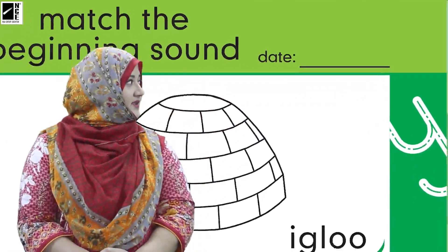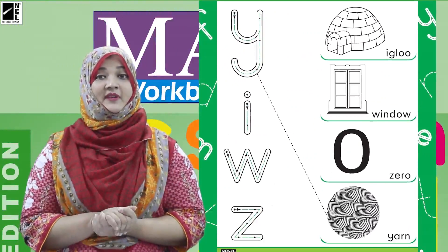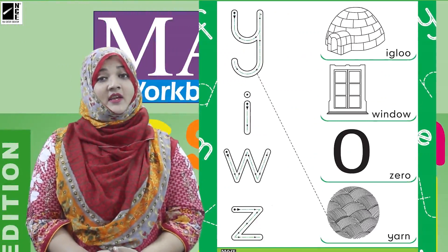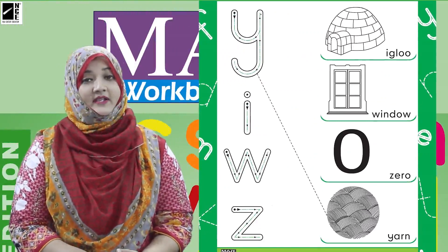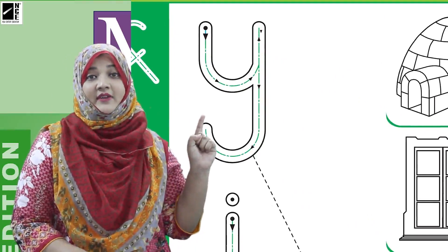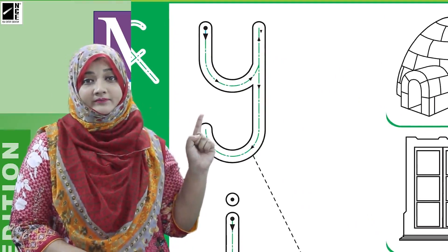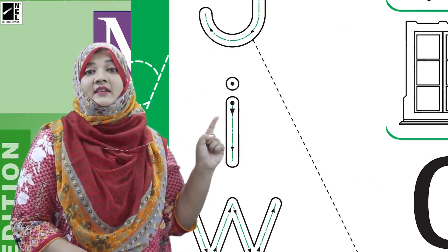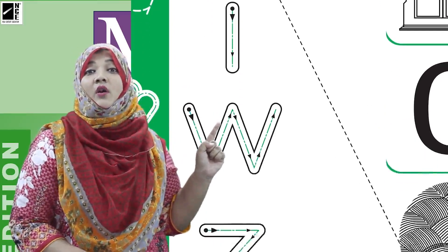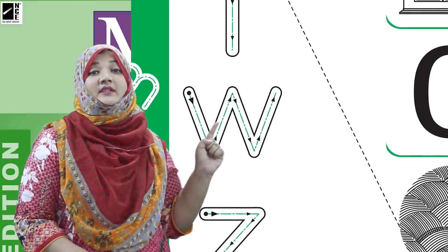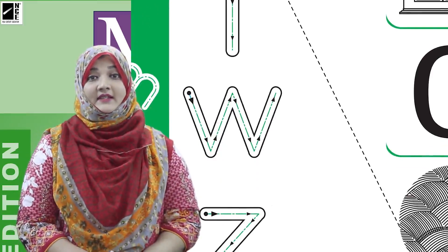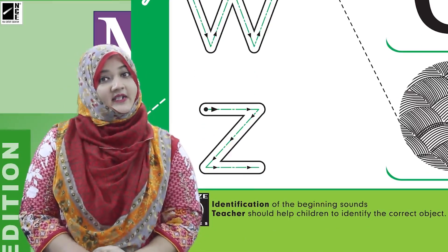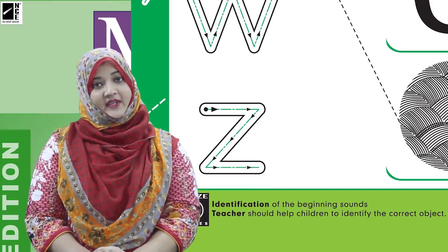Acha, ab hume kya karna hai — ye page dekh rahe hain aap. Yahaan pe kuch sounds hain humare paas. Hum pehle sounds read kar lete hain ki humare paas kaun kaun se sounds hain. First sound is Y, second sound is EE, third sound is WAR, and last sound is ZH. Yeh toh humne read kar liye sounds.